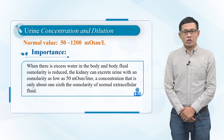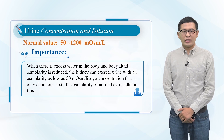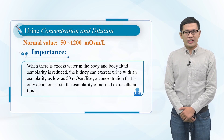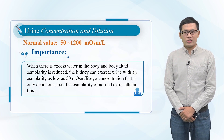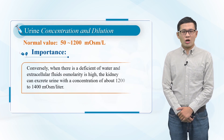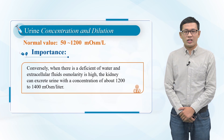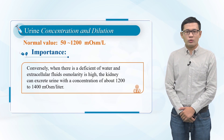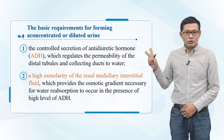When body fluid osmolality is reduced, the kidney can excrete urine with an osmolality as low as 50 microosmosis per liter. Conversely, when extracellular fluid osmolality is high, the kidney can excrete urine with a concentration of about 1200 to 1400 microosmosis per liter.